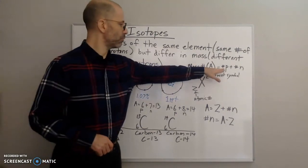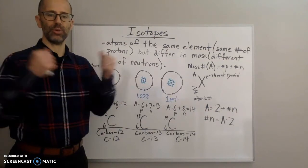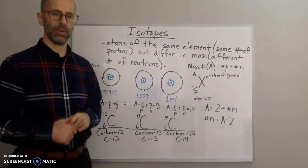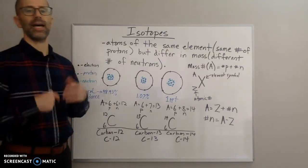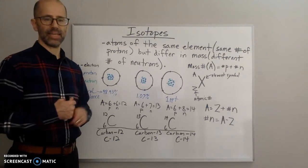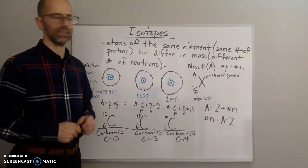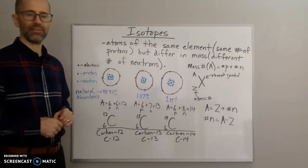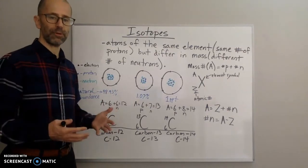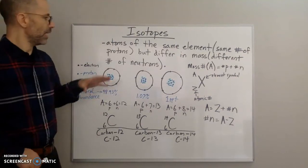The mass number A is the number of protons plus the number of neutrons together. We identify isotopes by their mass number, not by the atomic number, because all isotopes of the same element share the same atomic number. The mass number differs because the number of neutrons differs.